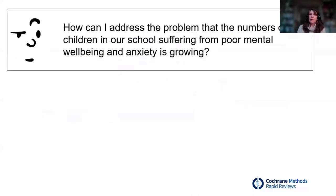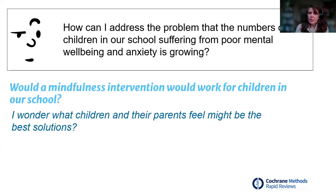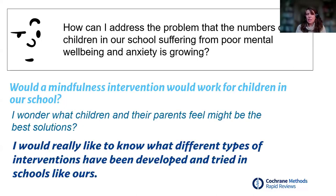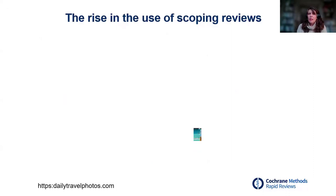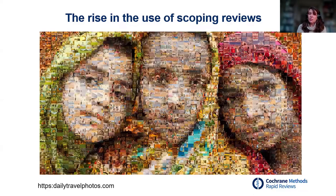Consider a policymaker aware of growing numbers of children in local schools with poor mental health and wellbeing, growing levels of anxiety. They might ask: would a mindfulness intervention work? What do children and parents feel are the best solutions? What different types of interventions have been developed and tried in schools like ours? That final question is appropriate for a scoping review. We're seeing increasing use of these approaches to support decision-making, because sometimes just looking at a specific intervention may not be very helpful.